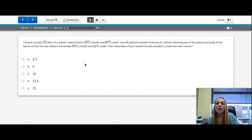Question number 44. A barrel contains 25 liters of a solvent mixture that is 40% solvent and 60% water. Lee will add pure solvent to the barrel without removing any of the mixture currently in the barrel, so the new mixture will contain 50% solvent and 50% water. How many liters of pure solvent should Lee add to create this new mixture? So right now we know that the barrel contains 25 liters of a solvent mixture where 40% is solvent. So let's figure out how many liters are the solvent. So let's do 25 and 40% is solvent. And that's 10 liters.